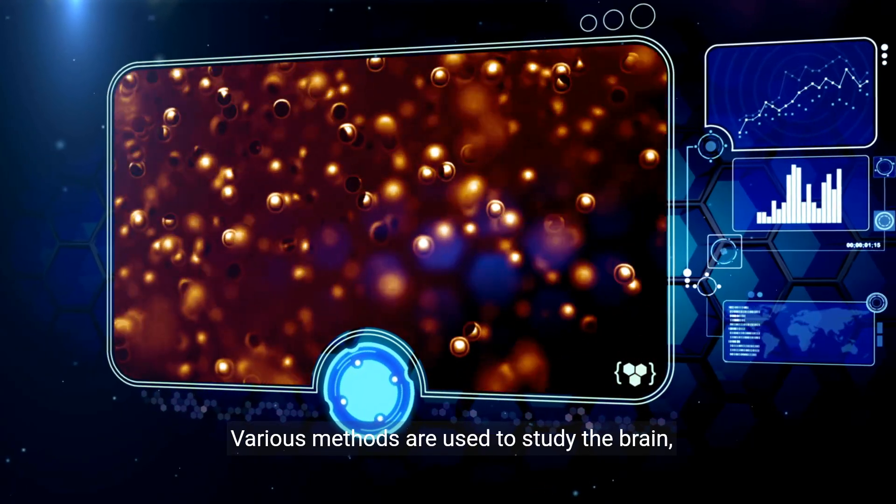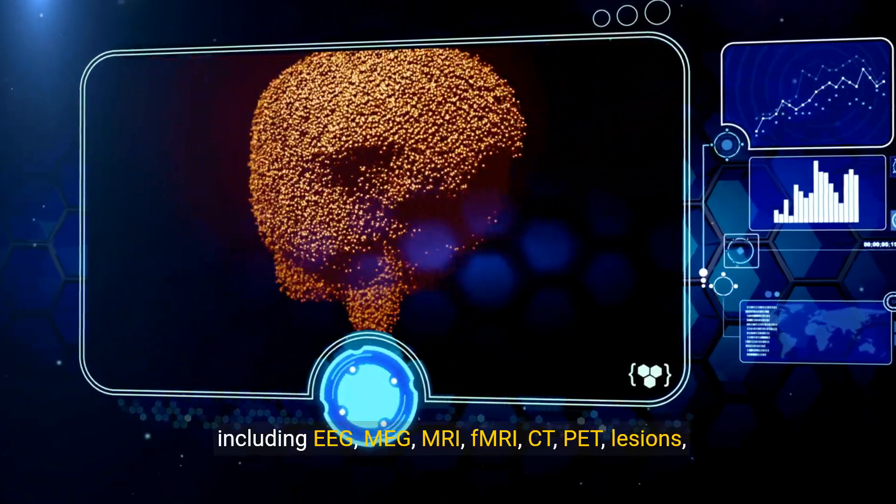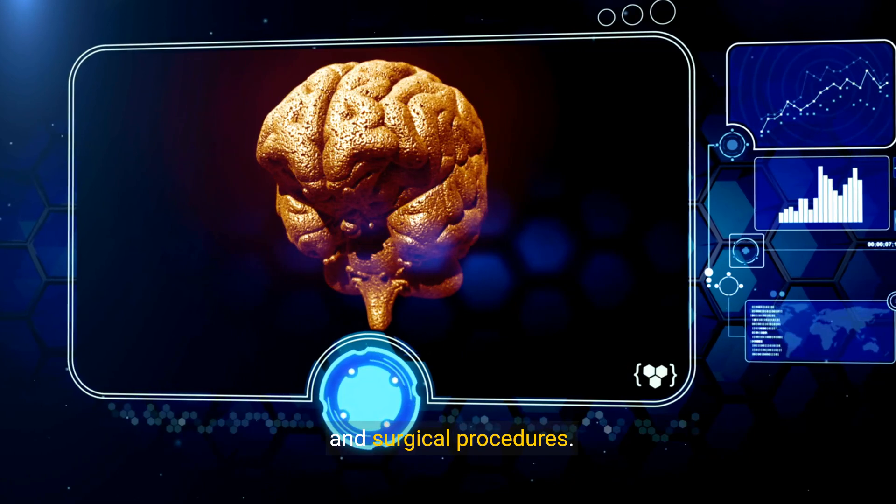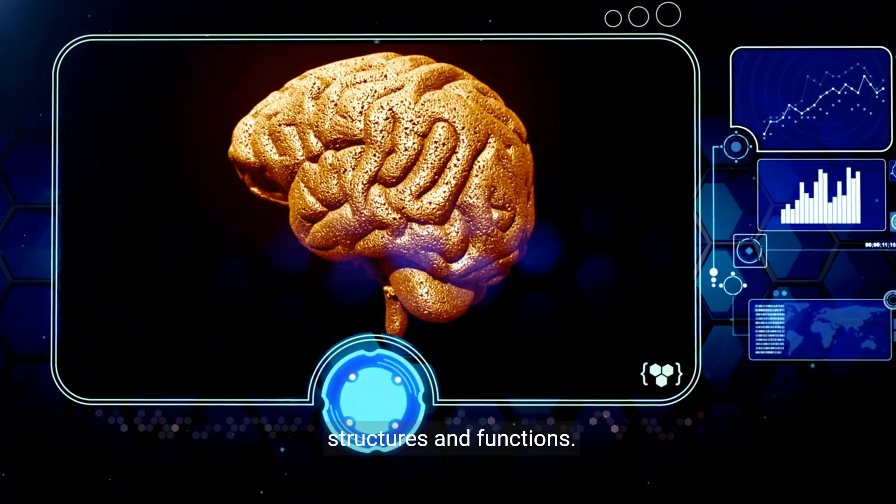Various methods are used to study the brain, including EEG, MEG, MRI, fMRI, CT, lesions, and surgical procedures. Each technique offers unique insights into brain structures and functions.